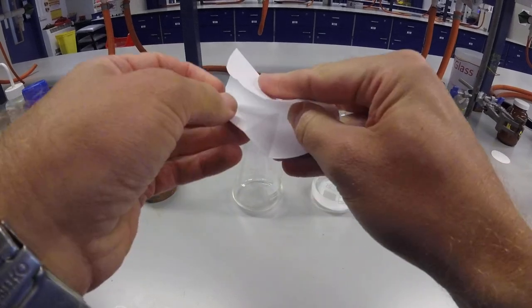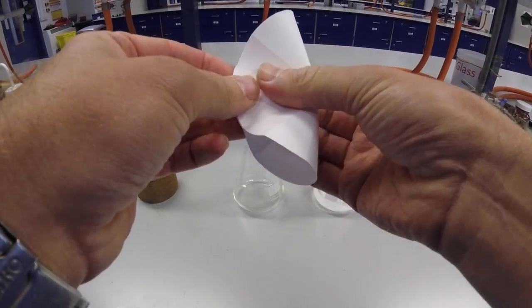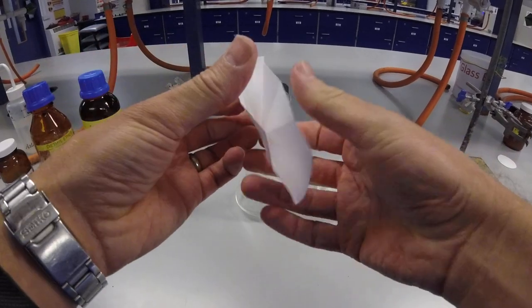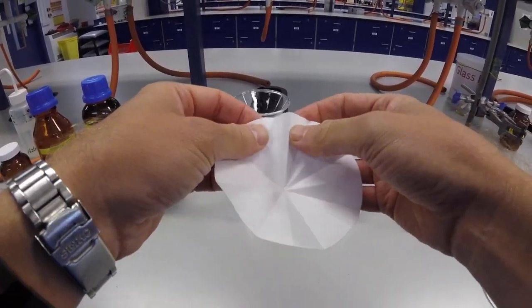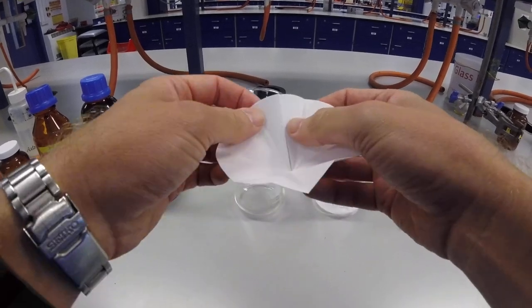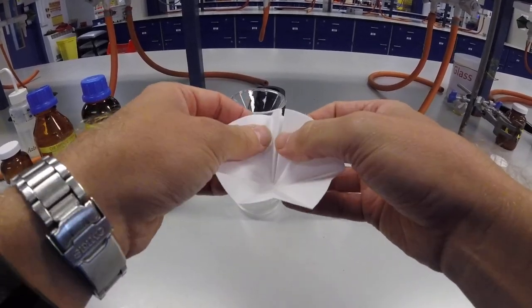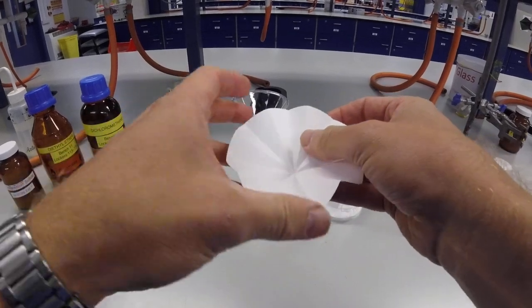And then the last one here. And so now all our folds are going in opposite directions. And give them a crimp and they'll move in.